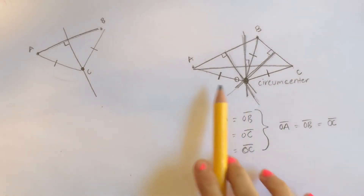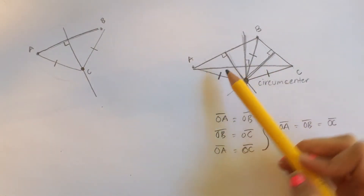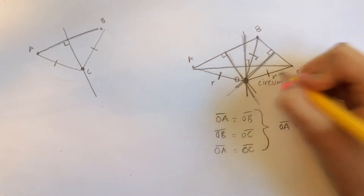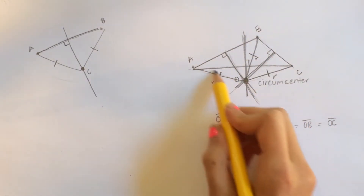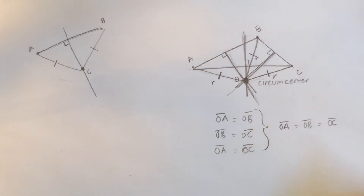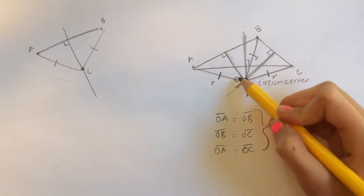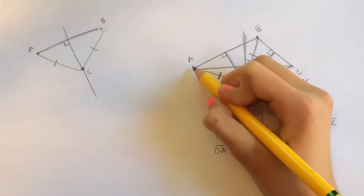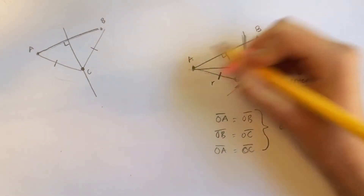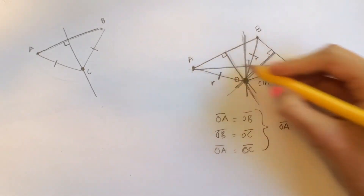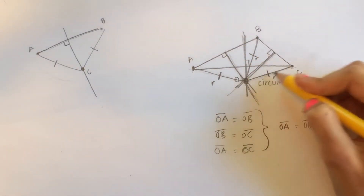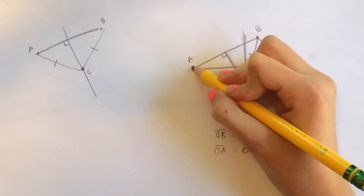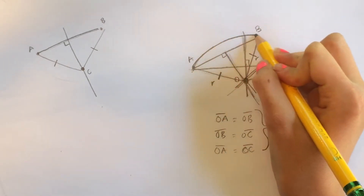So what does this tell us? Each of these segments — OA, OB, and OC — are equal, so let's call each of them R for radius. The radius of a circle is the distance from the center of the circle to any point lying on the circle. So each of the vertices A, B, and C can be endpoints of radii OA, OB, and OC of a circle with center O.